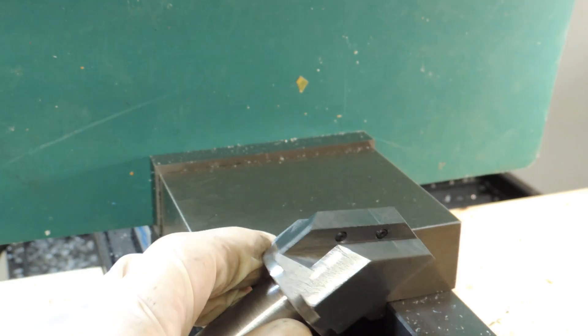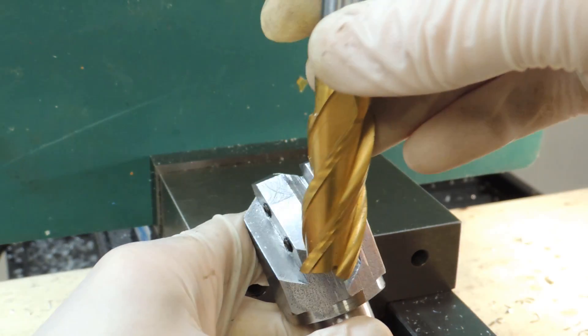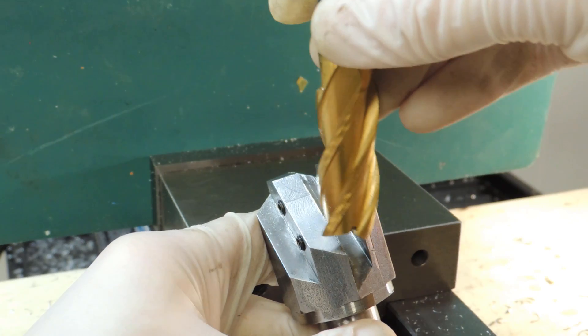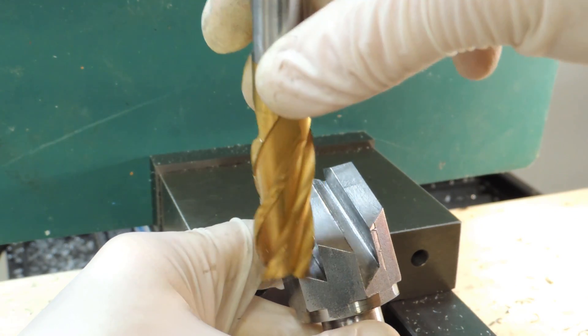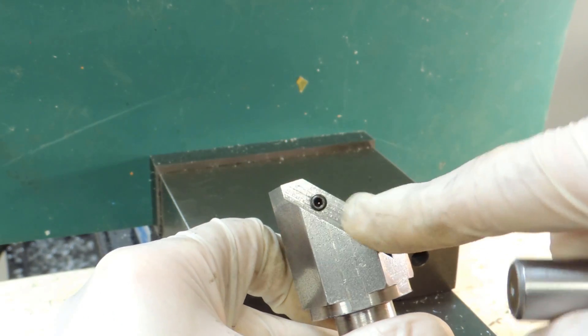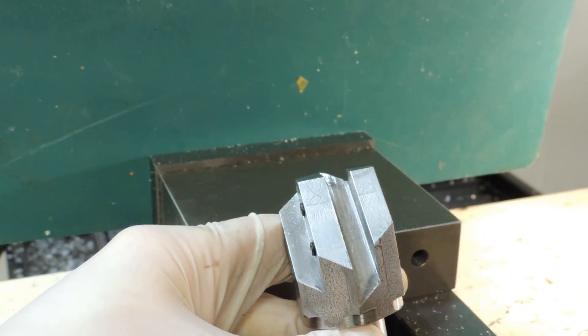Then I took a smaller end mill, obviously this one's too big, and just cut the slot through here and then cut this side off here so I'd have some room to put the set screws in, which hold the tool in place.